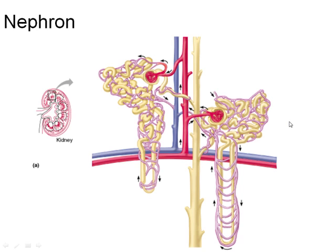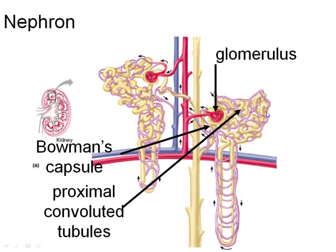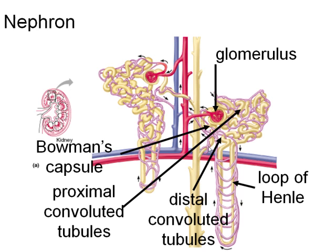A nephron has a little tuft of capillaries called the glomerulus, which is surrounded by the end of a tube called Bowman's capsule — this is where filtration takes place. The filtrate then travels through the proximal convoluted tubules, which are close to Bowman's capsule, then dips down into the renal medulla through the loop of Henle, and then back through the distal convoluted tubules. These feed into the collecting duct, which drains the processed fluid into the renal pelvis.